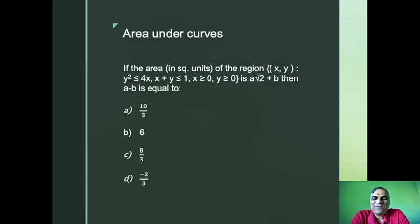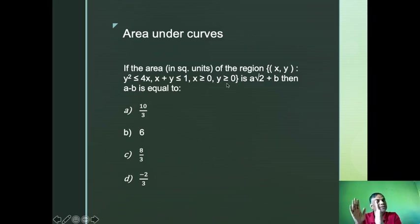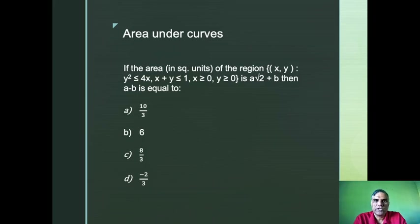The problem we are trying to solve is an area under the curve problem. It says: find the area in square units of the region (x, y) where y² ≤ 4x and x + y ≤ 1, and x and y are both greater than 0 — so this is in the first quadrant. If that area is a√2 + b, then what is a minus b?